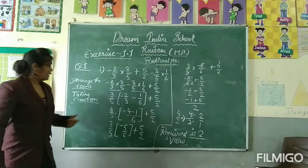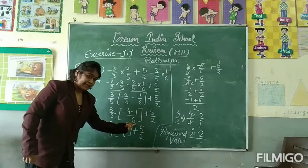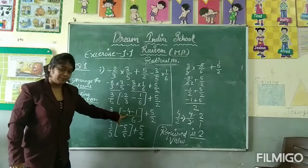Now we have to open this bracket. Taking LCM, that is 6. 2 times 3 is 6. Multiply by 2, we get minus 4.